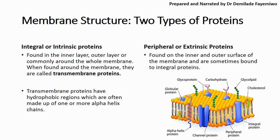There are two types of proteins found in the cell membrane. You have the integral or intrinsic proteins, which are found in the inner layer, the outer layer, or commonly span the whole membrane — when they span the whole membrane, we call them transmembrane proteins. You also have the peripheral or extrinsic proteins, which are found on the inner and outer surface and are sometimes bound to the integral proteins. In exams, questions about channel proteins and carrier proteins are far more likely.